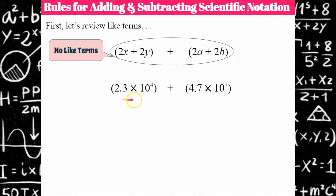When we're looking at scientific notation, we have a factor and a power of 10. In order to consider these like terms, the power of 10 needs to be the same — just as your variable with the exponent needs to be the same. Note that this rule only applies to adding and subtracting; it won't be the same for multiplying and dividing.